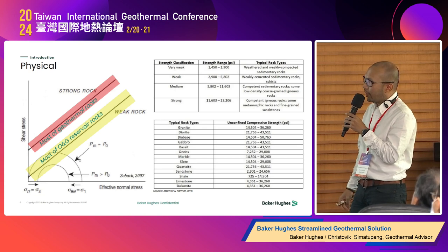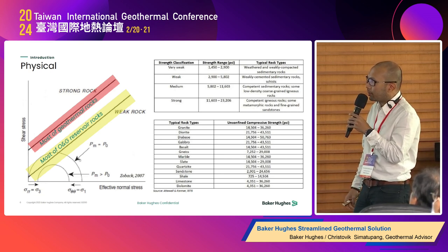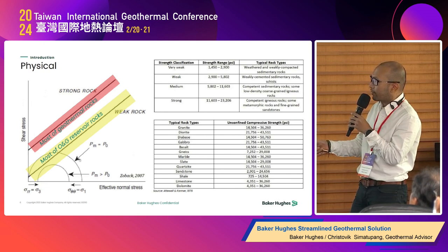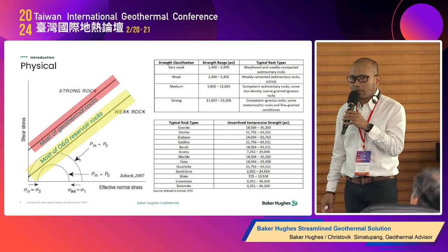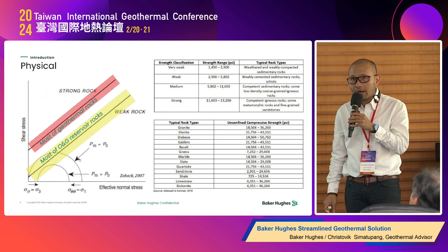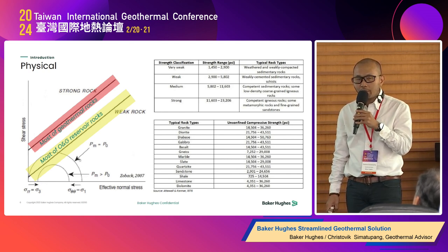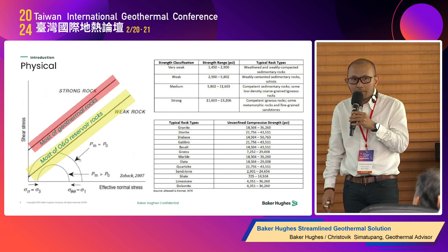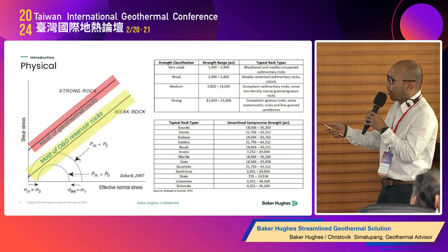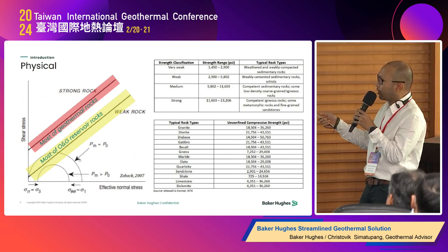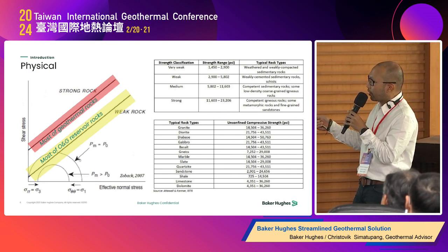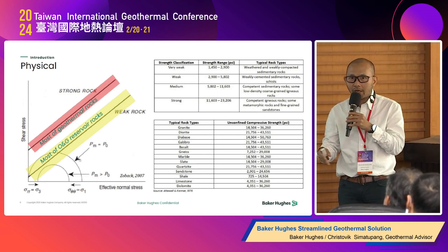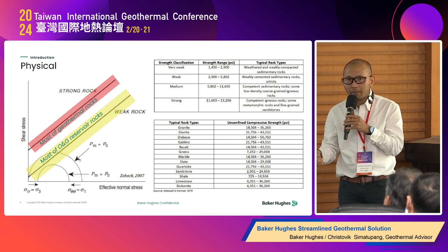Unlike oil and gas where rock is relatively incompetent, in geothermal we mostly deal with igneous and metamorphic rocks, which are competent enough. That's why geomechanics is not really applicable in a volcanic hydrothermal system, though it may apply to other systems. If we experience stuck pipe related to unstable formation in a geothermal well, it's likely not because of the rock formation itself, but because of clay.